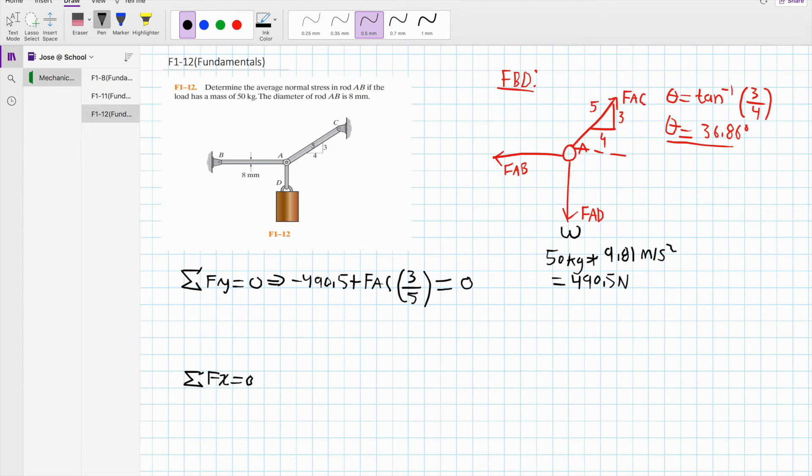Now we solve simply for FAC. We simply move 490.5 to the right, making it positive and divide by 3 fifths. For FAC, we get 817.5 newtons.